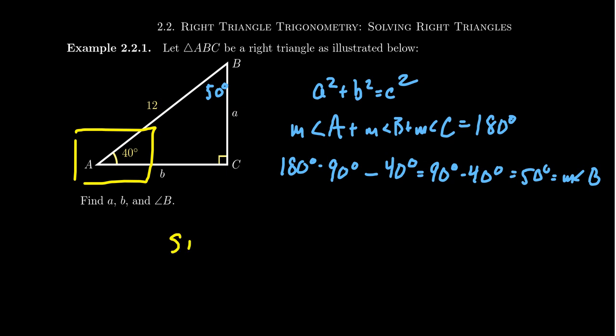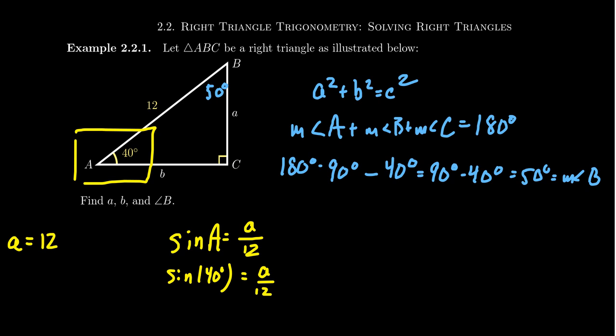We get that sine of A = a/12, so sine of 40° = a/12. Clearing the denominator gives us a = 12 × sin(40°). This is the exact answer. If a homework or test question asks for the exact answer, this is it. We can approximate by using a calculator.